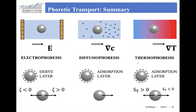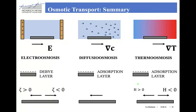For thermophoresis, the direction of the phoretic motion is given by the sign of the Soret coefficient, where migration towards the cold region — when the Soret coefficient is positive — is typically much more common in experiments. The opposite essentially happens for fluid transport near a fixed surface, which is the case of electroosmosis, diffusoosmosis, and thermoosmosis.